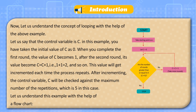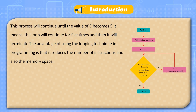Let us say that the control variable is c. In this example, you have taken the initial value of c as 0. When you complete the first round, the value of c becomes 1. After the second round, its value becomes c equals c plus 1, i.e., 1 plus 1 equals 2, and so on. This value will get incremented each time the process repeats. After incrementing, the control variable c will be checked against the maximum number of repetitions, which is 5. This process will continue until the value of c becomes 5 — the loop will continue for 5 times and then terminate. The advantage of using the looping technique in programming is that it reduces the number of instructions and also the memory space.